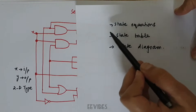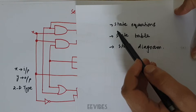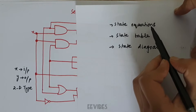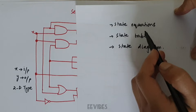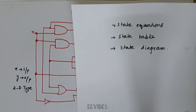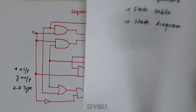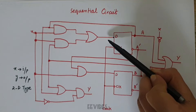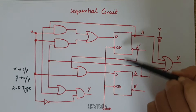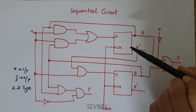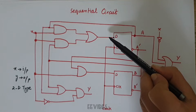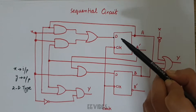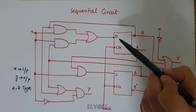Now let's see step by step what is meant by the state equation, state table, and state diagram. The state equations are actually the equations that relate the input, output, and the current state or the next state of the flip-flop. For determining the state equations, we try to write the output function as a function of the inputs. Since I have used two D-type flip-flops, whatever input is present will be forwarded at the output side.